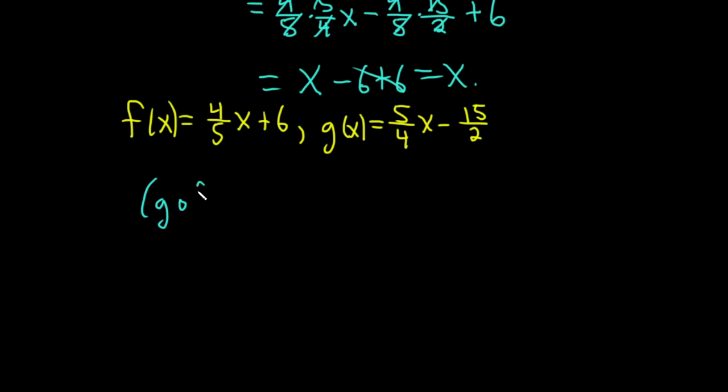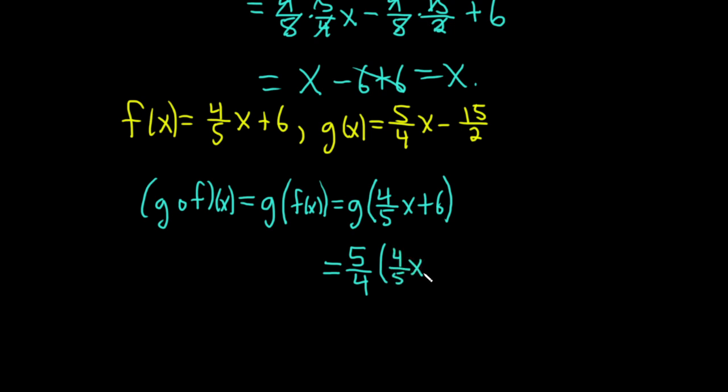So g of f of x. So this means g of f of x. And so we replace the inside piece. So this is g of, and just replace f of x with what it is. So this is 4 fifths x plus 6. This is equal to... So this is your x. This whole thing here. So now you look at g and just replace x with all of this. So this is 5 over 4. And then your x is 4 fifths x plus 6. Then you have minus 15 halves.